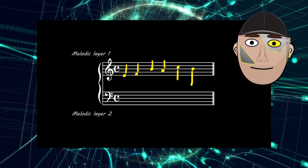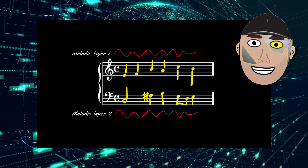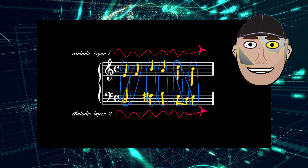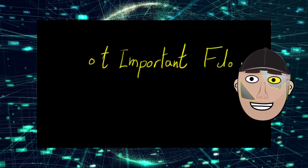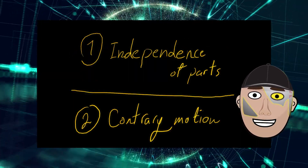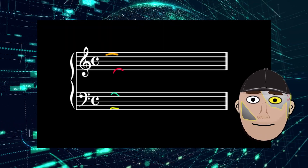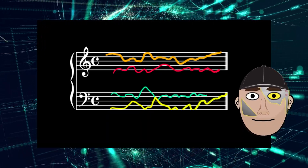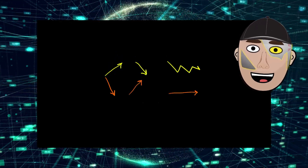So what is voice leading? Voice leading, or part writing, is the linear progression of individual melodic lines. This will create natural interaction with each layer and lead to the creation of harmonies. The most important factors are independence of parts and contrary motion. Independence of parts means the voices should have their own space so we can imagine them as melodies, and contrary motion helps our ear hear each layer as an individual melody.